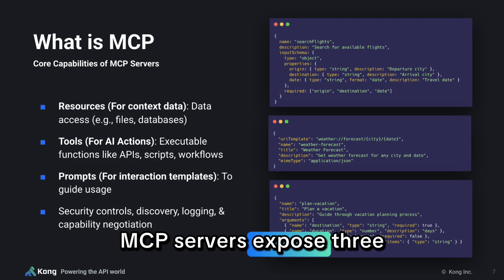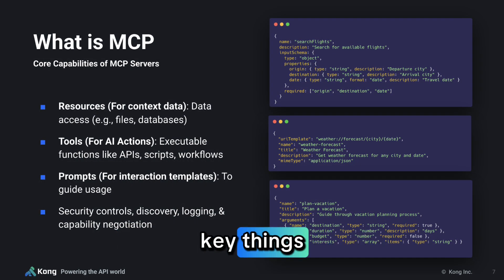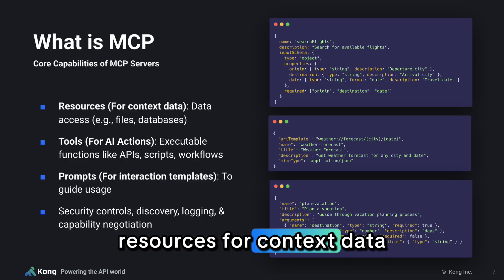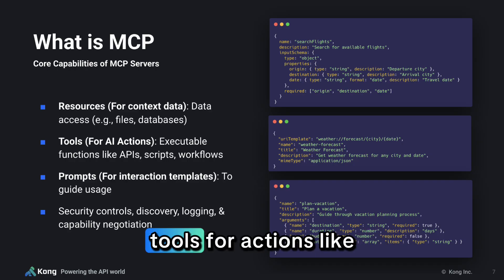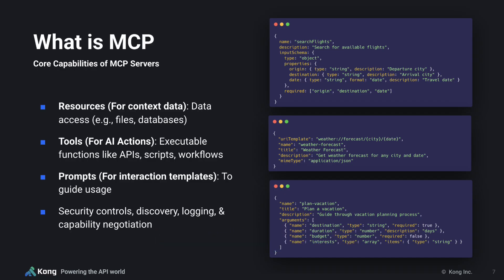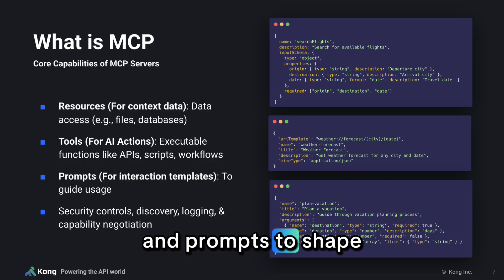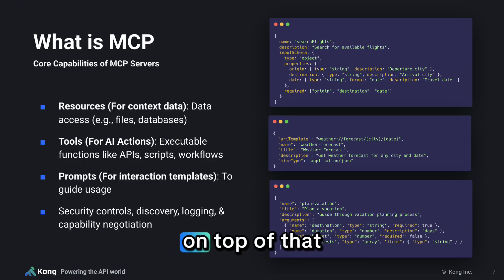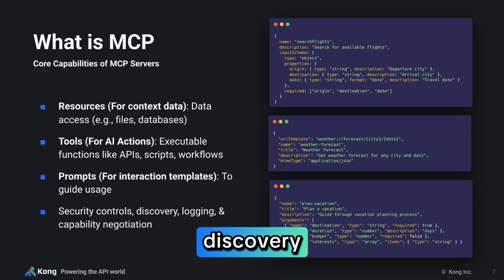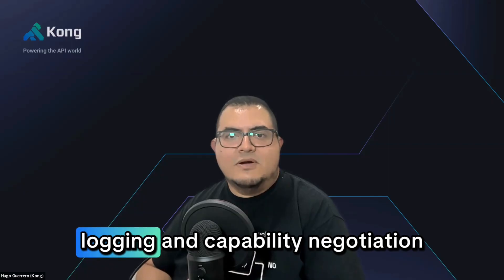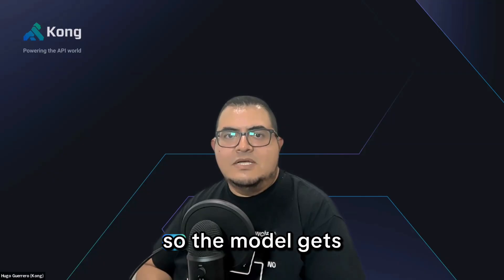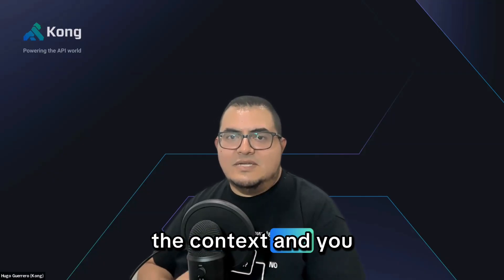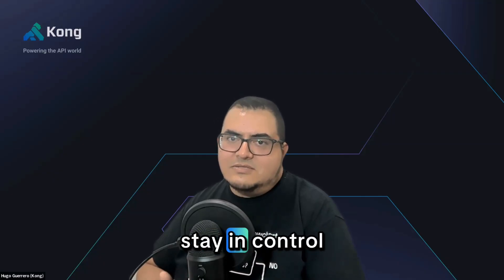MCP servers expose three key things: resources for context data like files or databases, tools for actions like APIs or workflows, and prompts to shape model behavior. On top of that, you get controls for discovery, logging, and capability negotiation. So the model gets the context, and you stay in control.